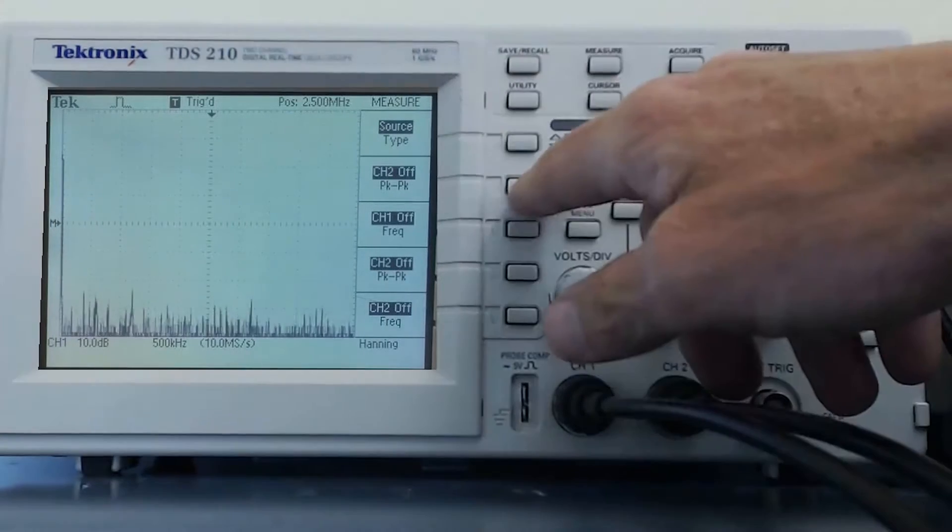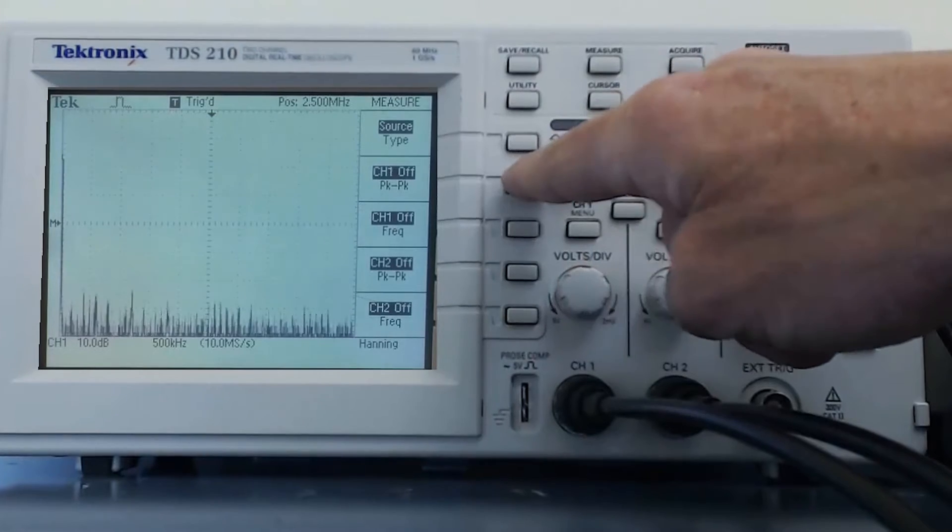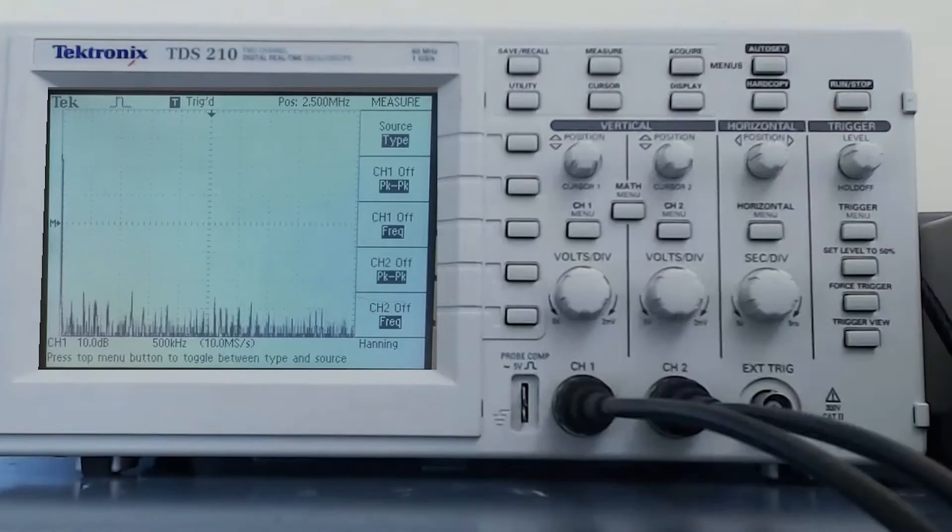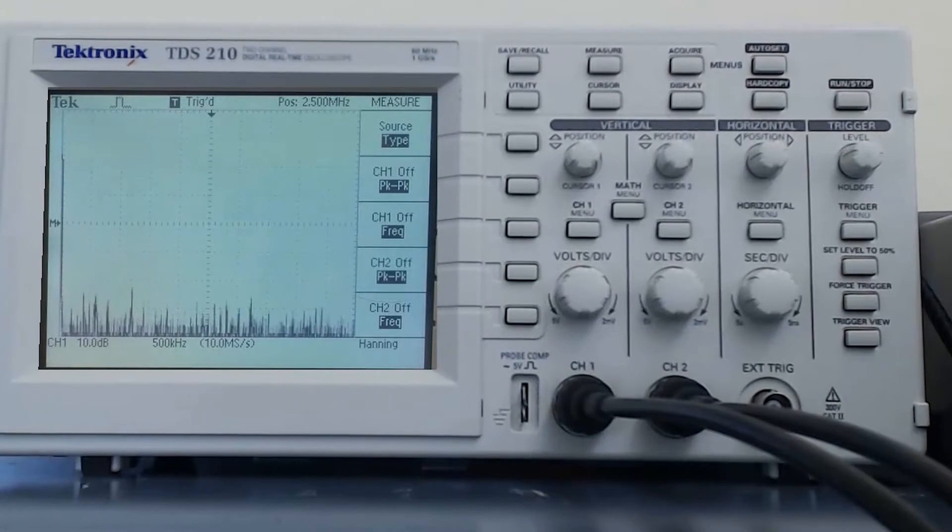And if the source is selected and I press any of the buttons next to the menu items, we see the channel changes from 1 to 2. If I press the top button so that type is selected, then we can change through the different types of measurements the oscilloscope can perform.